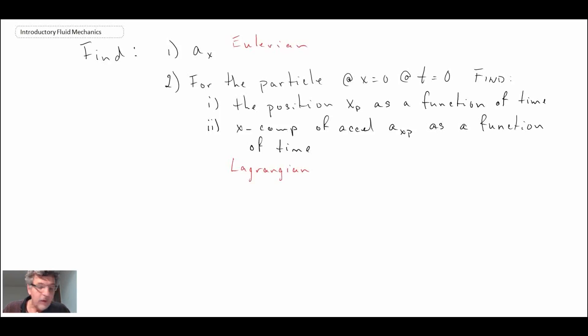Let's begin with the solution. We will begin with the first part, which was the Eulerian description of the acceleration of the particle. For that we're going to use our substantial or material derivative, which we saw in the previous segment.